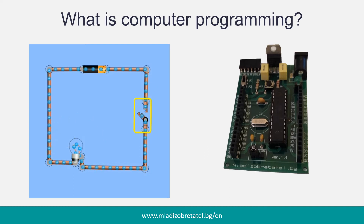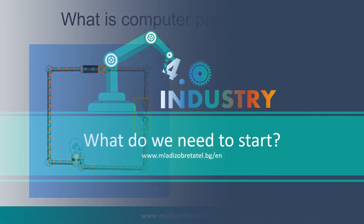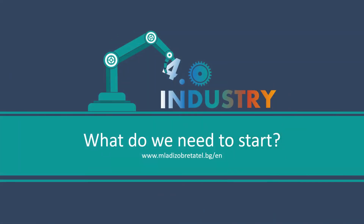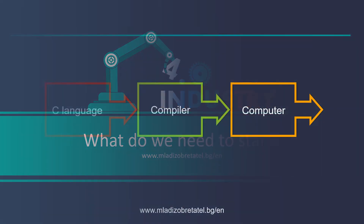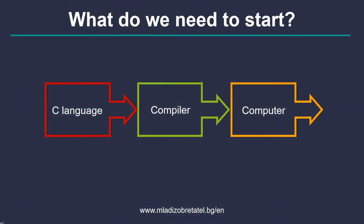So what do we need to start? In order to program we need 3 major things. The first one is a programming language. There are many different programming languages, but we will discuss them in the next tutorials. We will use a slightly modified C language called Arduino C. This is all you need to know for now.